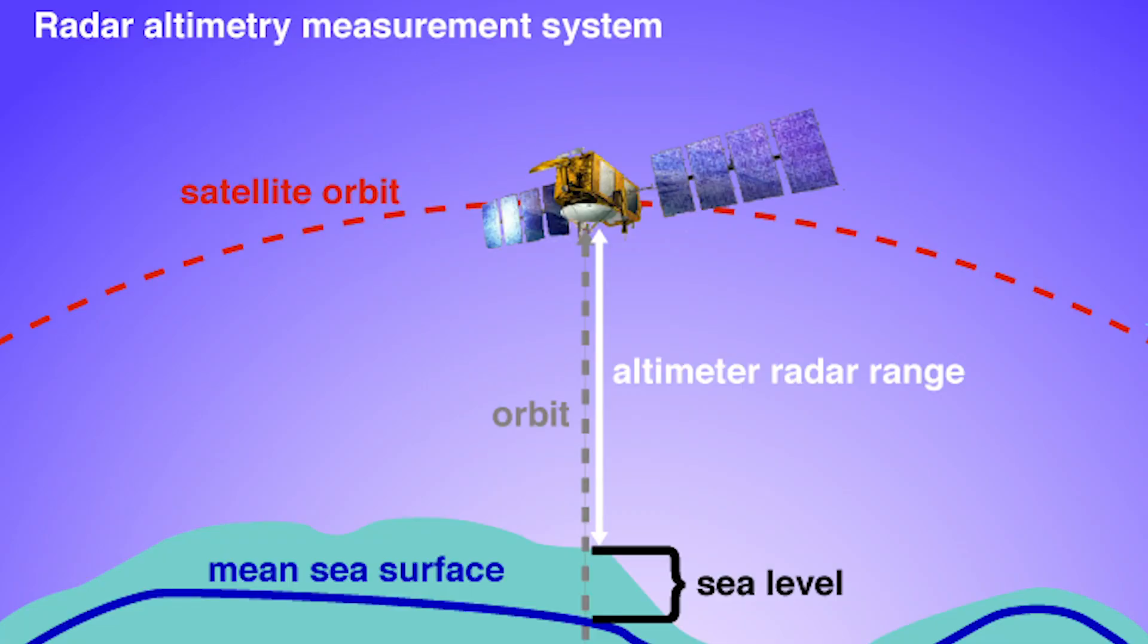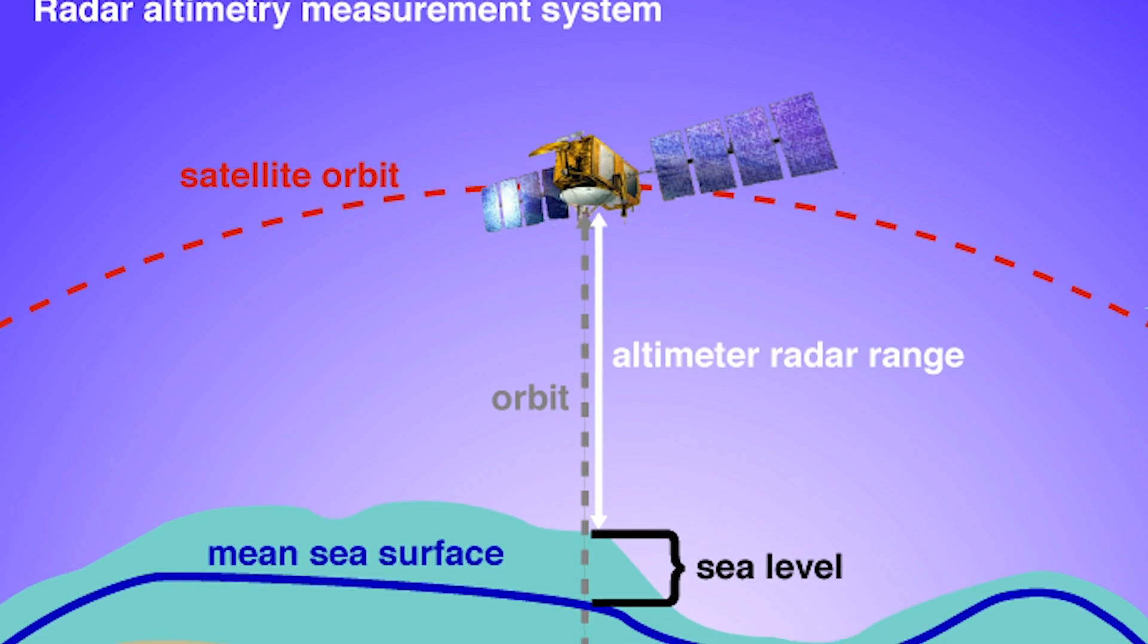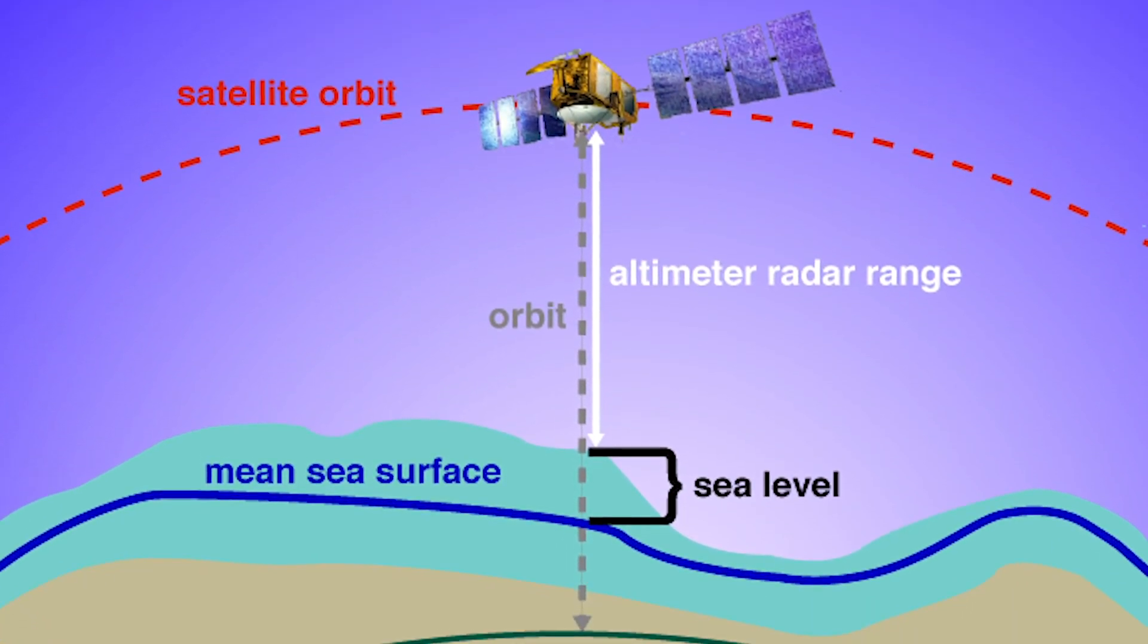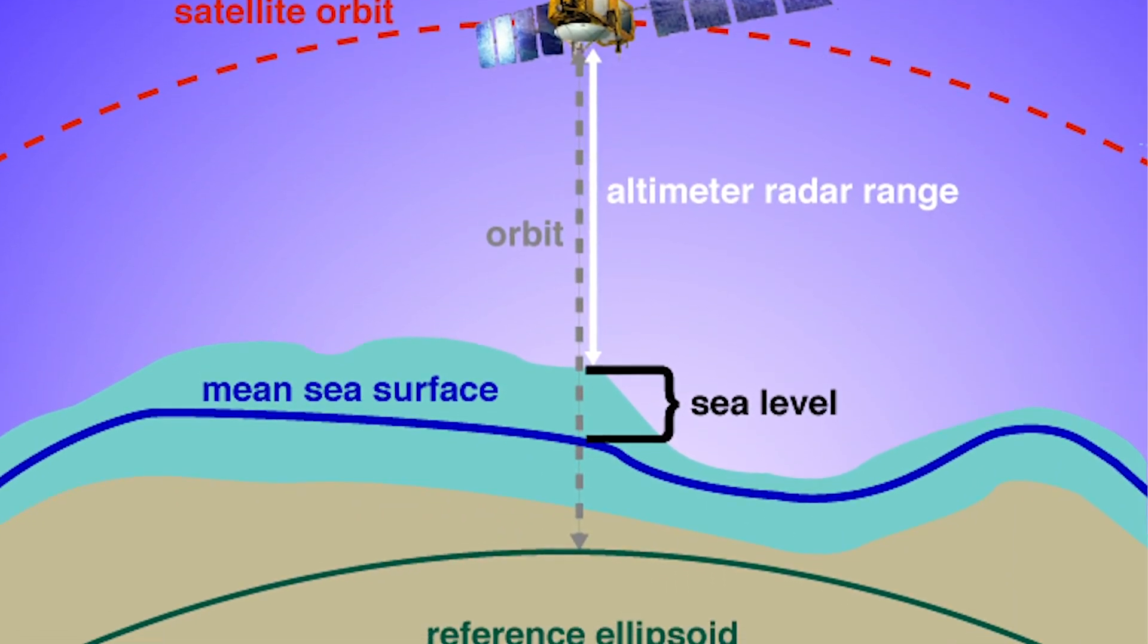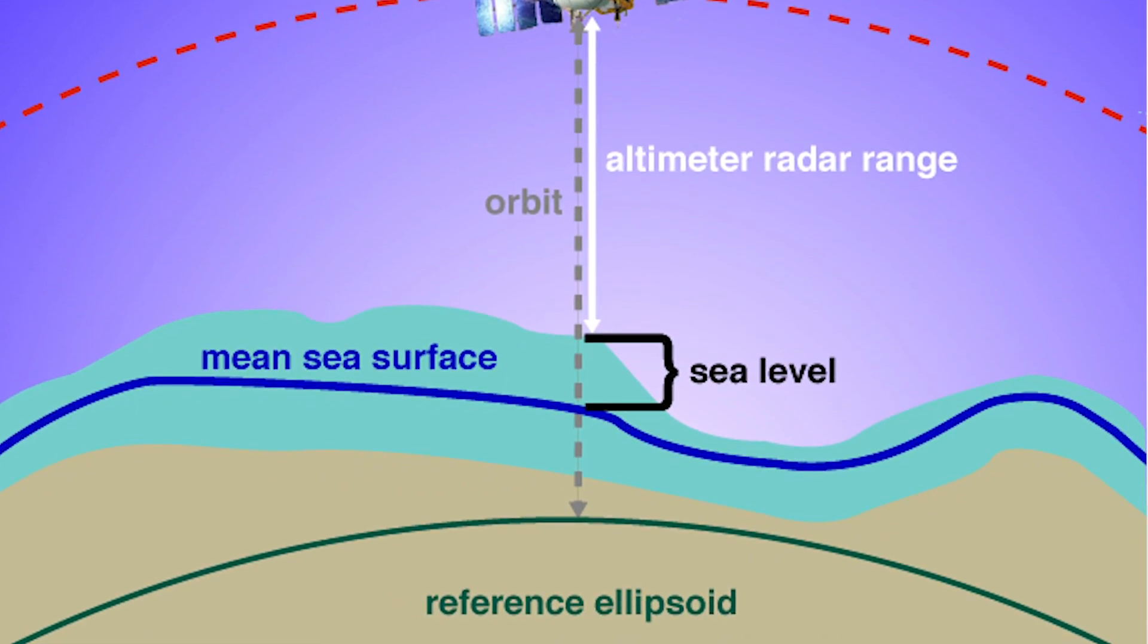So this is where satellites come in. They measure sea levels by sending microwave bursts down to the surface and then recording the time it takes for them to return. By comparing their distance to the position above the Earth's center, they can determine the actual sea level by comparing the readings with their position.